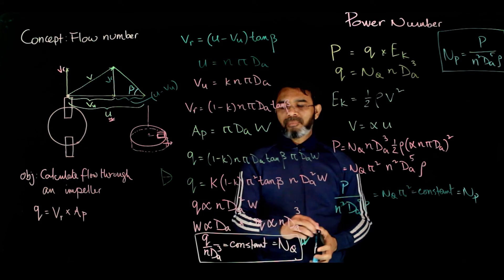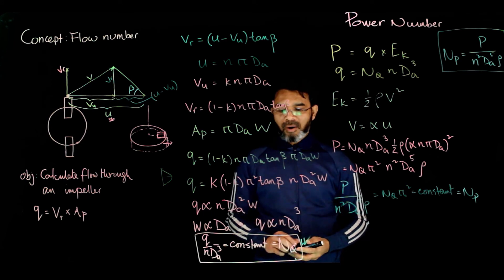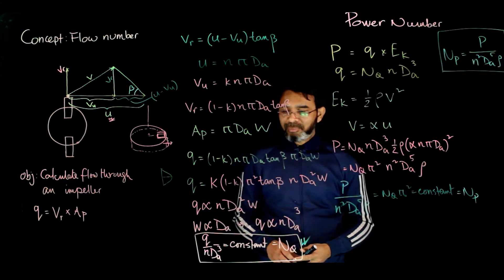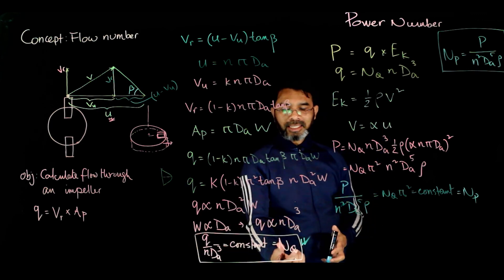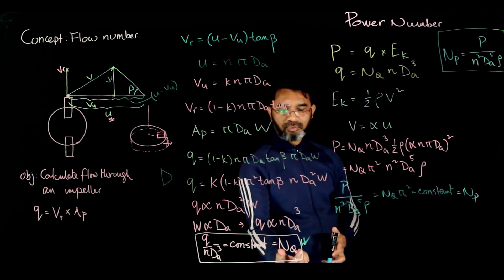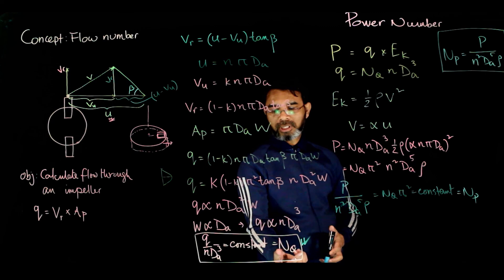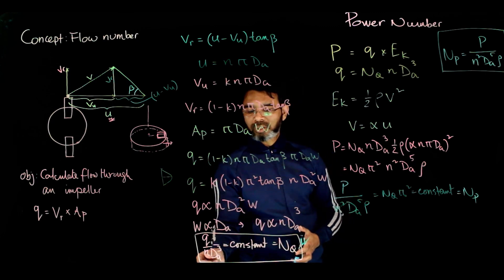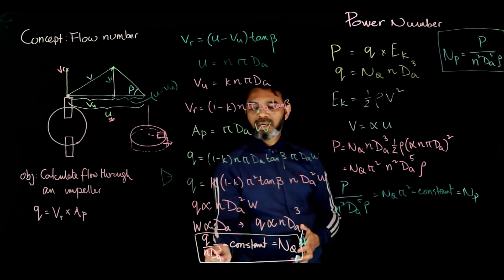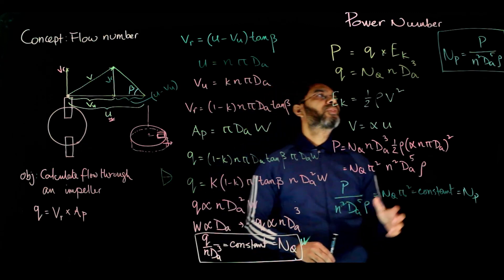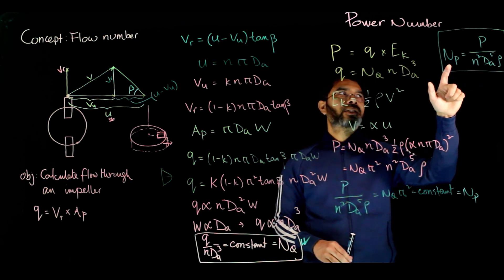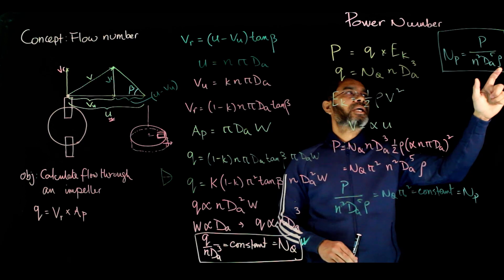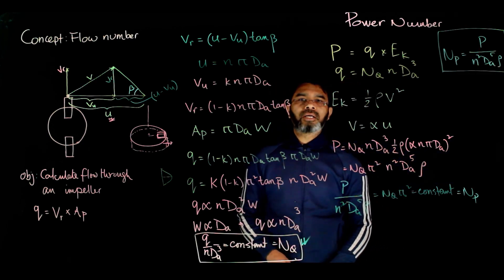The flow number and power number are used to estimate the flow and power requirements for an impeller. Experimental values for the flow number N_q are available in the literature for various impellers; knowing the rotational speed n and impeller diameter da allows calculation of the flow rate. Similarly, experimental values of the power number N_p for different impellers allow calculation of the power requirement if the rotational speed, impeller diameter, and fluid density are known.